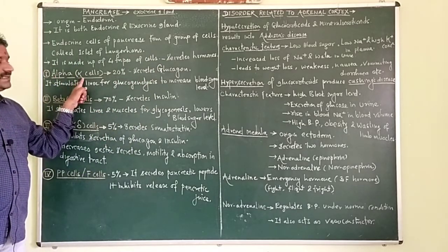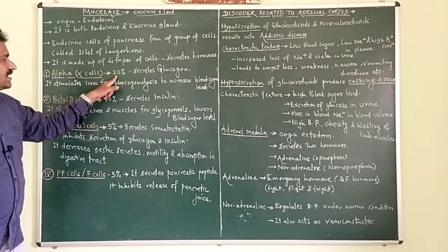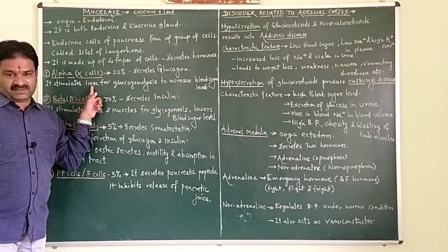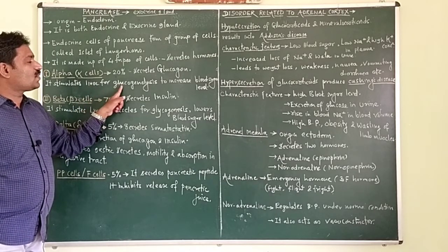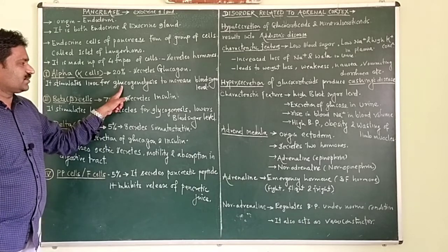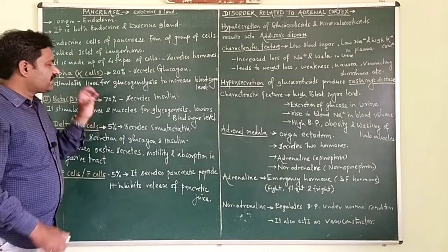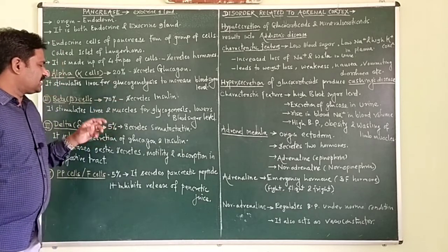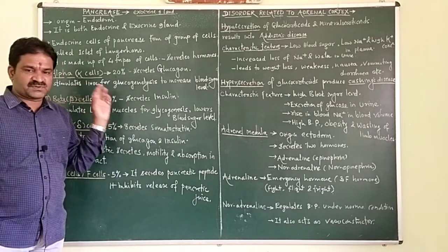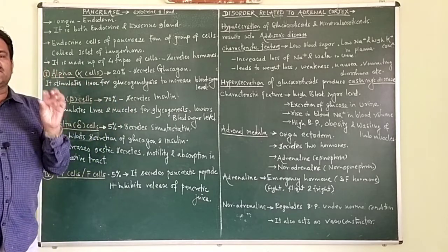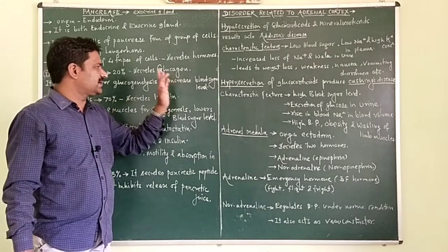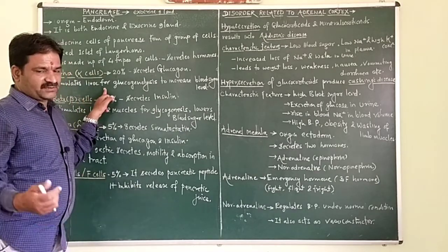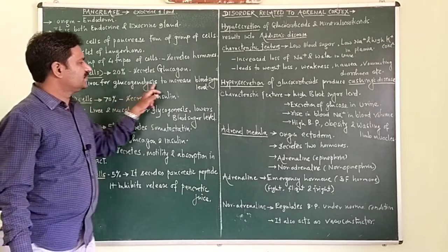Alpha cells constitute 20% of the Islets of Langerhans and secrete the hormone glucagon. Glucagon stimulates the liver for glycogenolysis — the process in which glycogen is broken down into glucose — thereby increasing the blood sugar level.